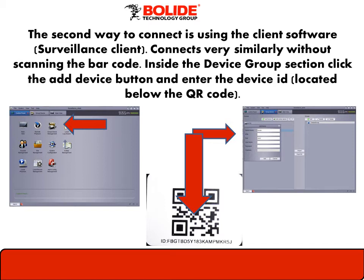Once the Surveillance Client Software opens, go to the Group Device Management icon and select it. In the next menu, select Add Device located on the upper left side. In the Add Device menu, fill out the required information and hit the Add button to continue.